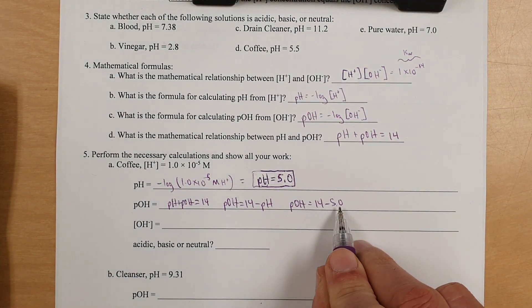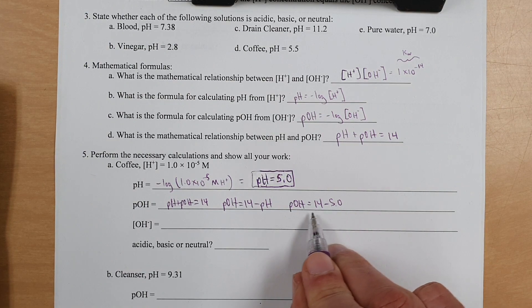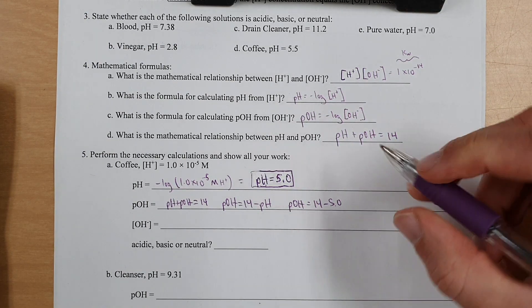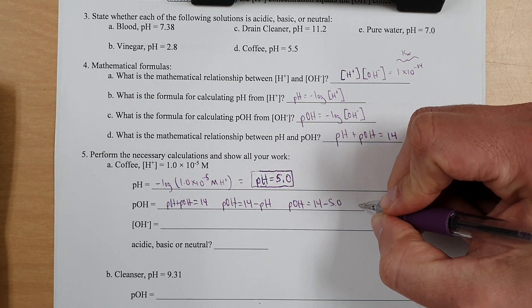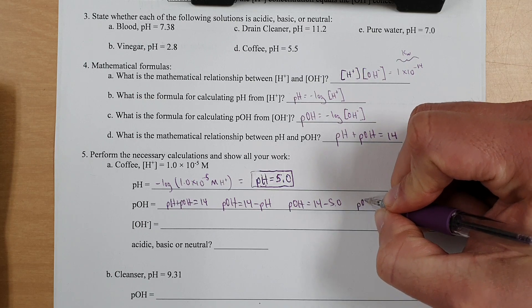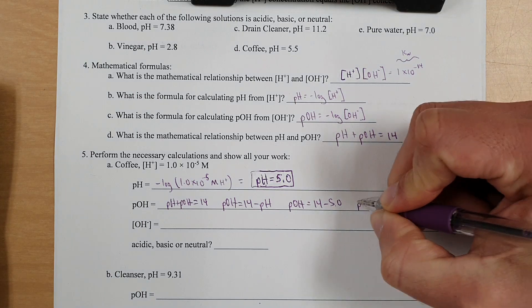So this has infinite sig figs, but see how this goes to the tenths place? Make sure your answer goes to the tenths place also. So 14 minus 5 is 9, so pOH equals 9.0.